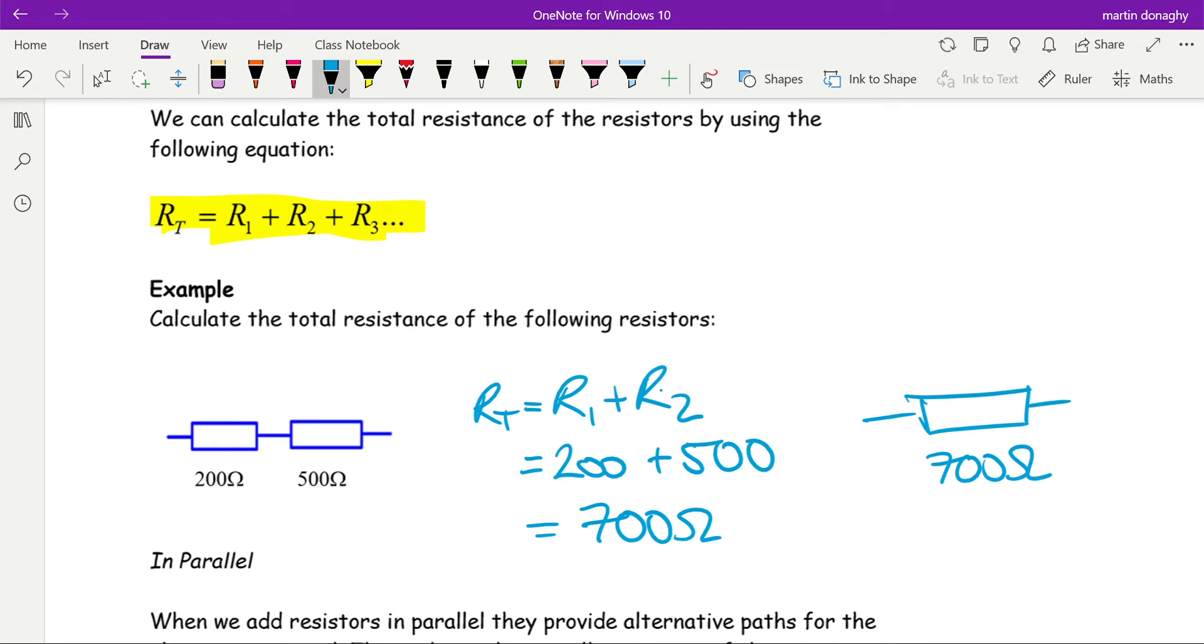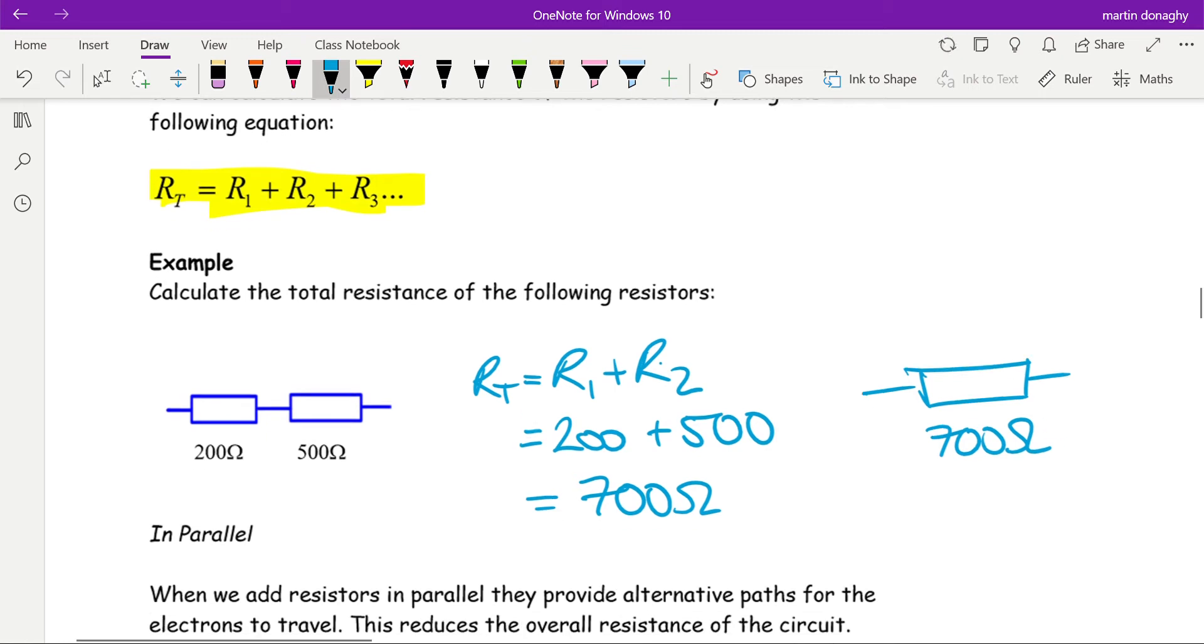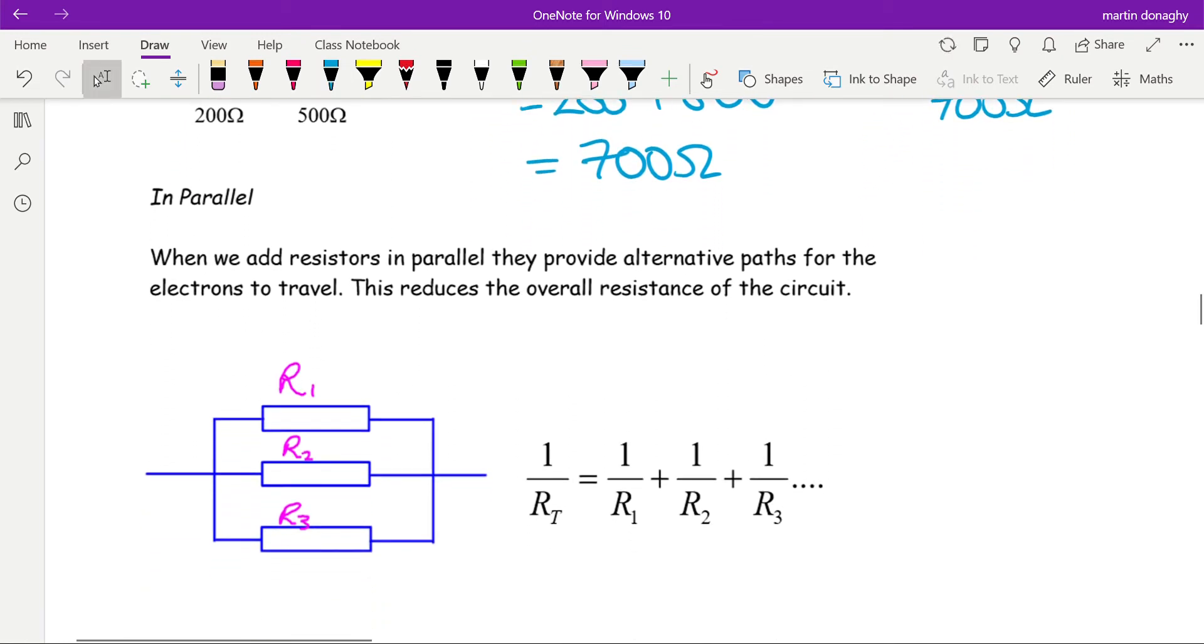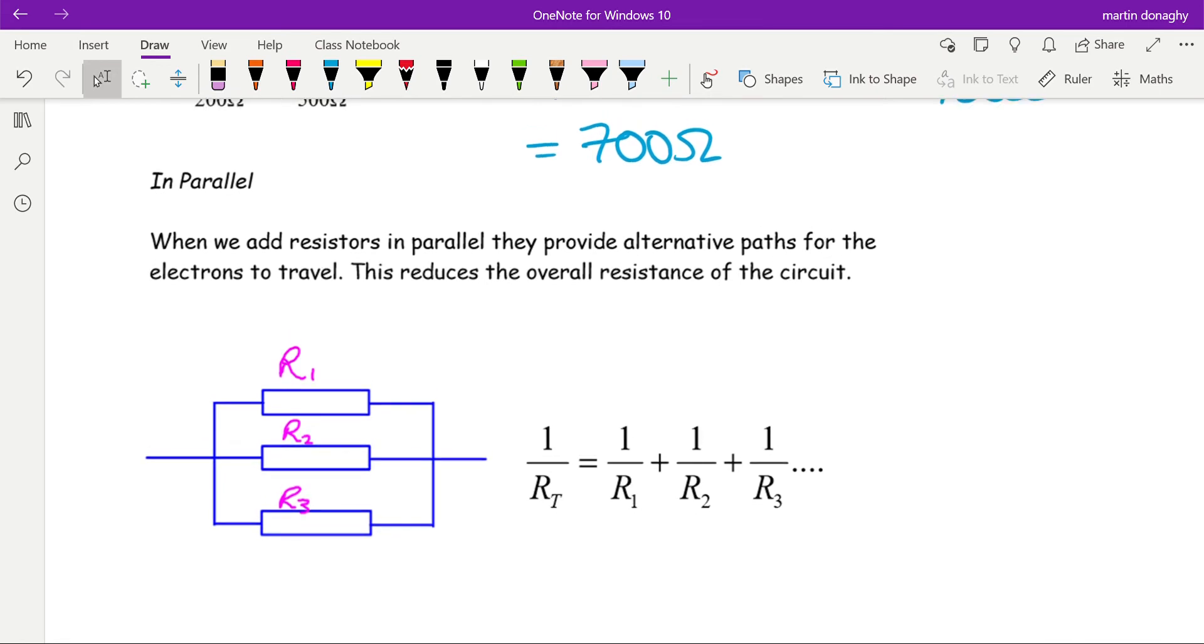Series is relatively straightforward. Parallel is more complicated. In fact, if we add a resistor in parallel what it does is it reduces the overall resistance of the circuit because it gives another path for the current to travel along. It actually makes it easier for the current to get around the circuit, therefore the resistance is less.